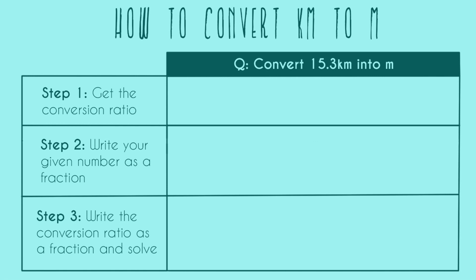So step one is to get the conversion ratio. For every conversion problem, you're going to have two units and you just have to know from either memorization or looking it up how many units of one equal how many units of the other. And so in this problem, one kilometer equals a thousand meters.